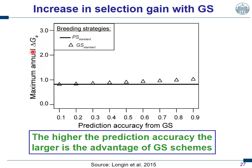This was calculated in a publication. You see here the maximum annual selection gain for different prediction accuracies for genomic selection, increasing from 0.1 to 0.9. The line is the annual selection gain for the phenotypic standard scheme, which doesn't change with prediction accuracy because it does not use genomic selection. In contrast, the triangles show a slight increase in annual selection gain with increasing prediction accuracy — which is logical because this breeding scheme uses a one-step genomic selection approach. The higher the prediction accuracy, the larger is the advantage.